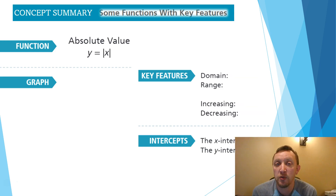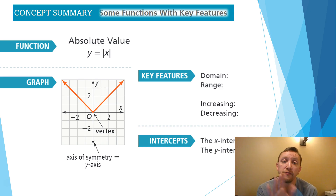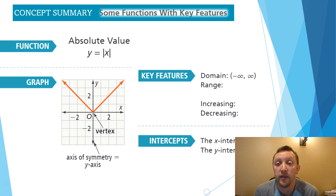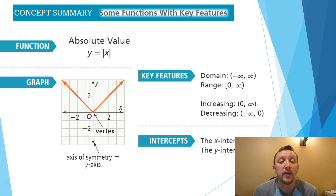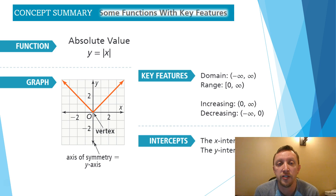Now let's look at the parent function for an absolute value function: y = |x|. The graph forms a V shape — not a U — made by two straight lines. Like a parabola, it has a line of symmetry along the y-axis, so it's the same on both sides, and it also has a vertex. The domain is from negative infinity to infinity. The range starts at 0 and goes up to positive infinity. It's increasing from 0 to infinity and decreasing from negative infinity to 0, with x-intercept and y-intercept both at 0.